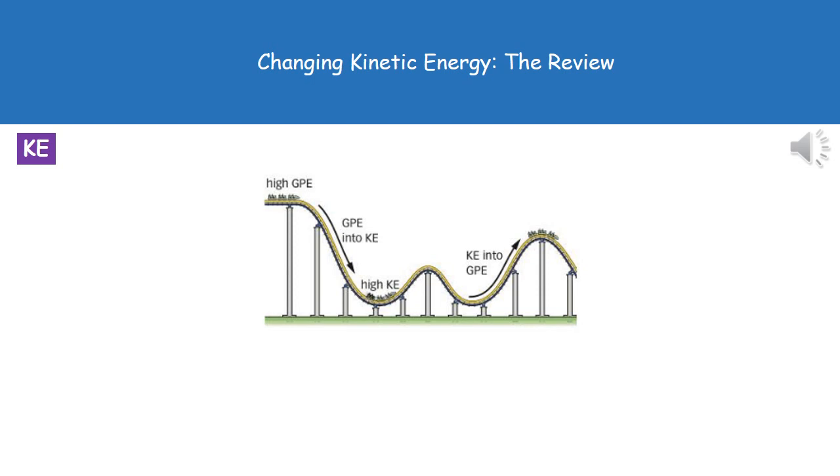When we get down to the bottom of that dip, we've got a very high kinetic energy because our gravitational potential energy is low. Then as we start to go back up the slope, the kinetic energy is converted back into gravitational potential energy and so on along the track.